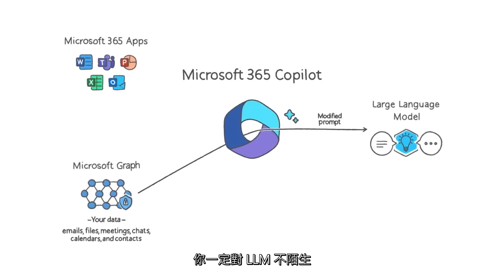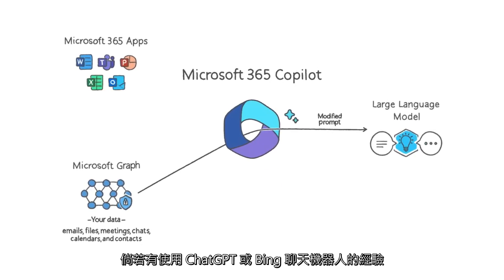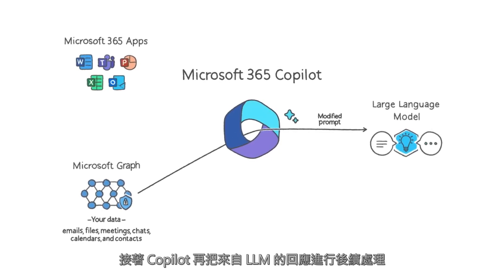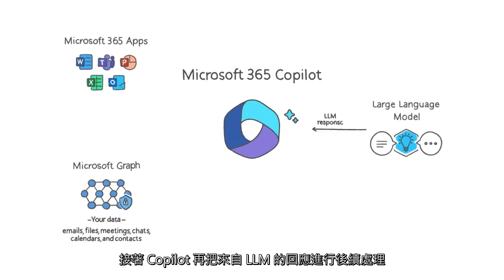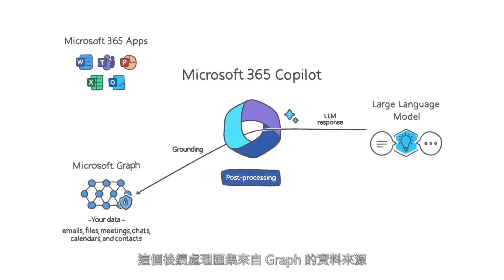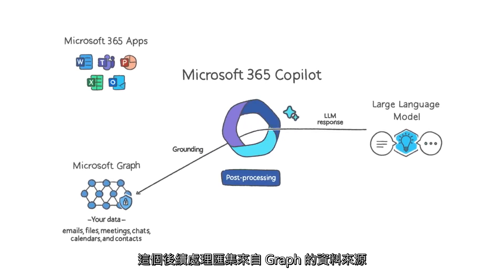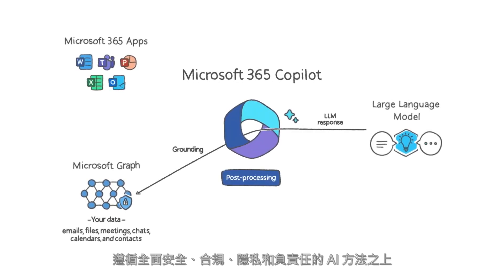You may be familiar with what an LLM can do based on your experience with ChatGPT or Bing Chat. CoPilot takes the response from the LLM and post-processes it. This post-processing includes additional grounding calls to the graph, responsible AI checks, security, compliance and privacy reviews, and command generation.